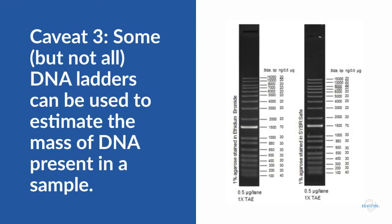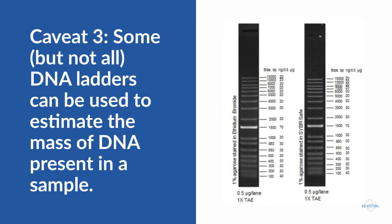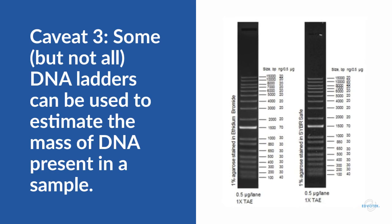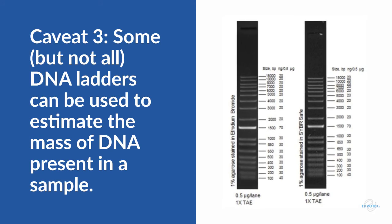Finally, some DNA ladders can be used to estimate the mass of DNA present in a sample by comparing the intensity of the bands in the ladder to your sample. For example, this ladder is from Thermo Fisher Scientific. But be careful, this feature can only be used if you load the amount of ladder that is recommended by the manufacturer.